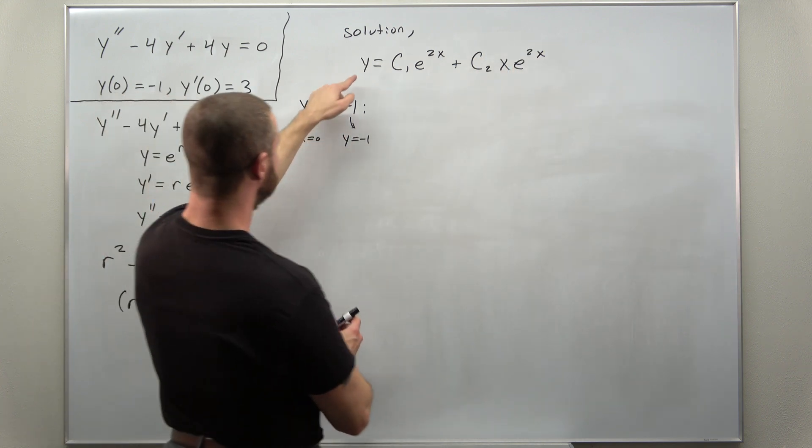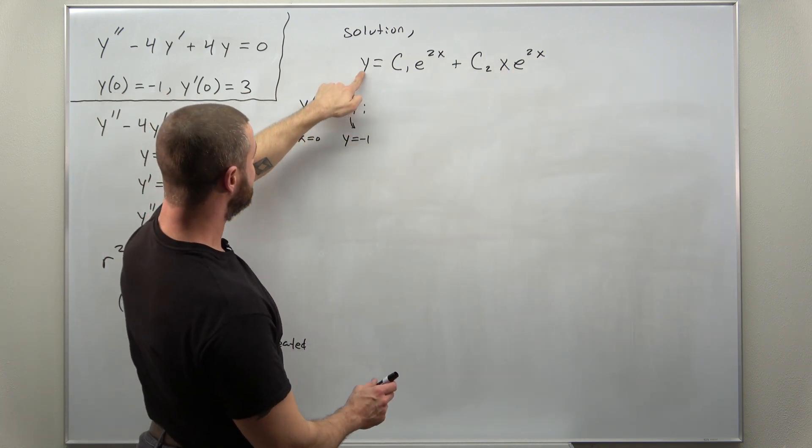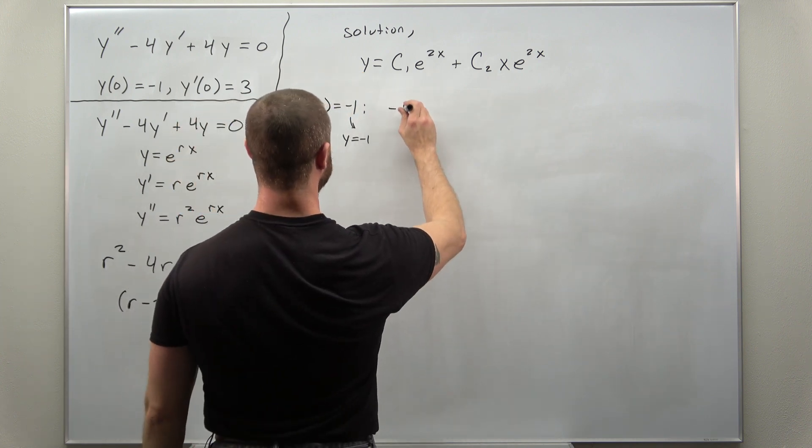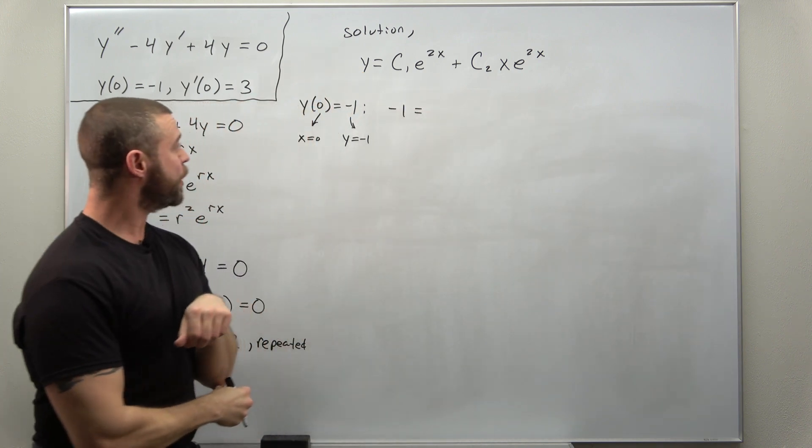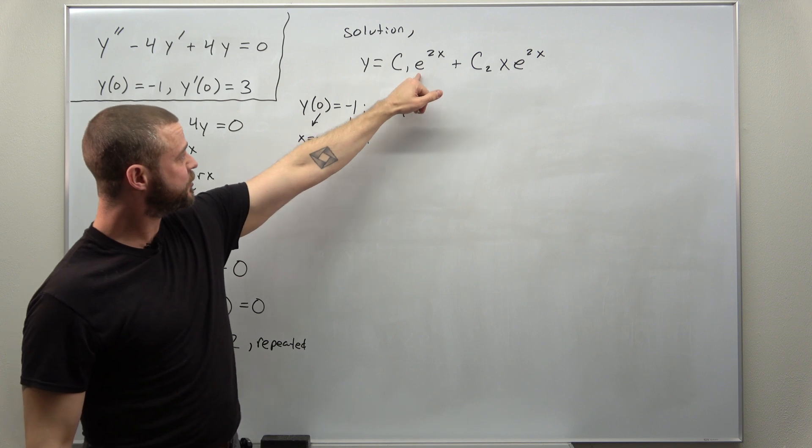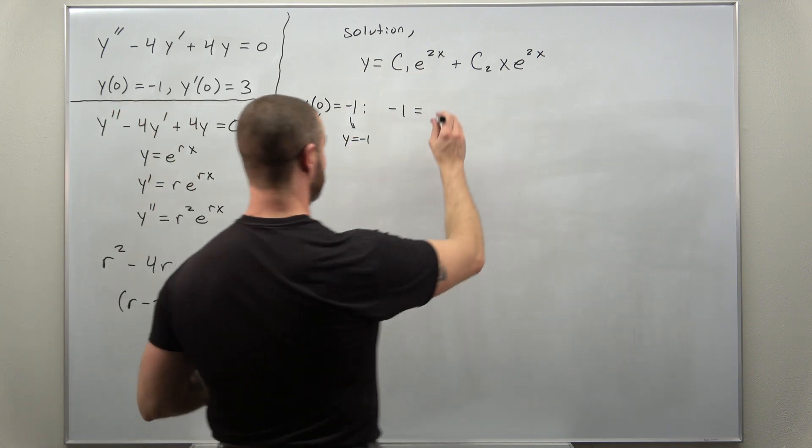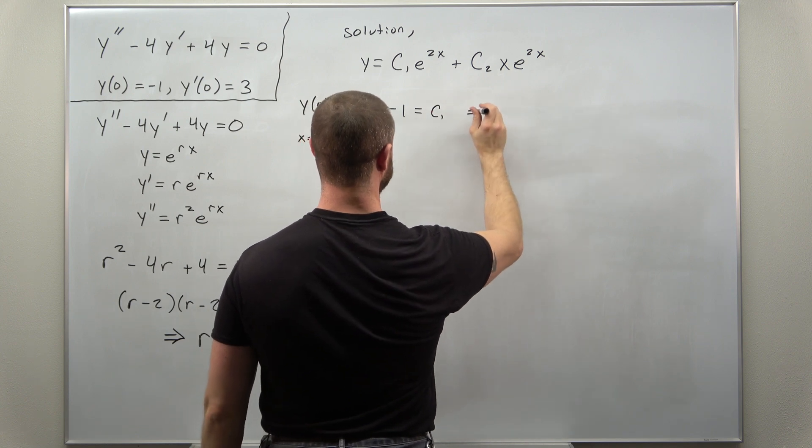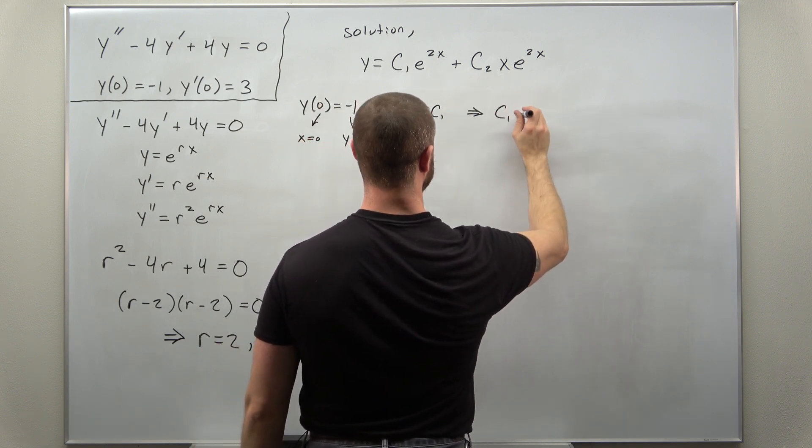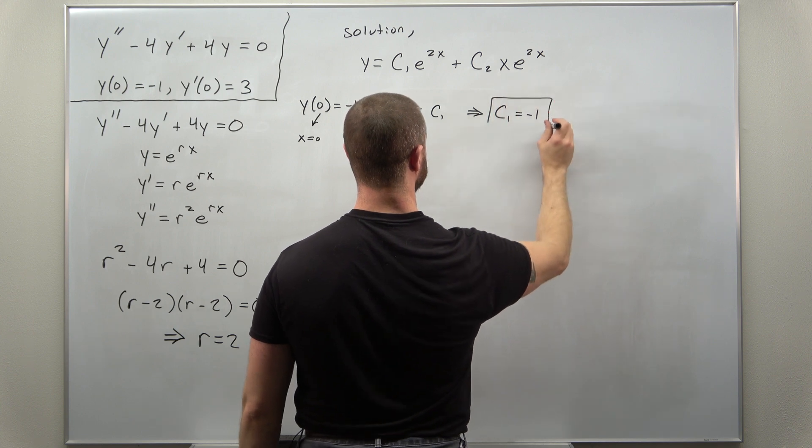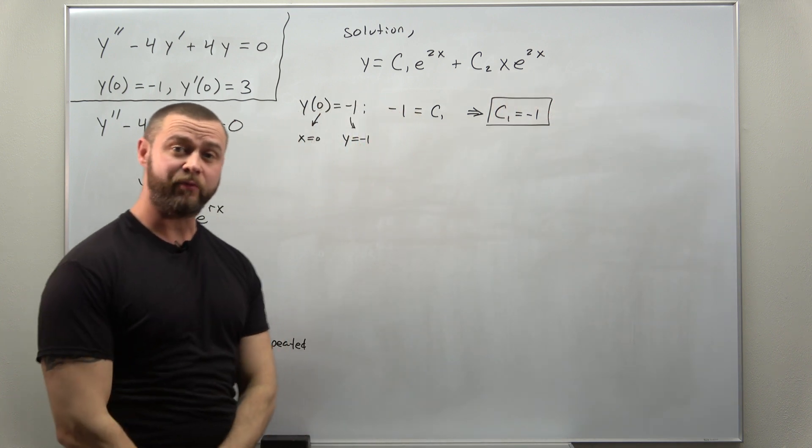So if we plug this in we get a really simple equation. Y becomes negative 1 and it looks like what we're left with, since x is 0, we're just getting e to the 0 so we're just left with c1 on that right side. That tells us that c1 equals negative 1.